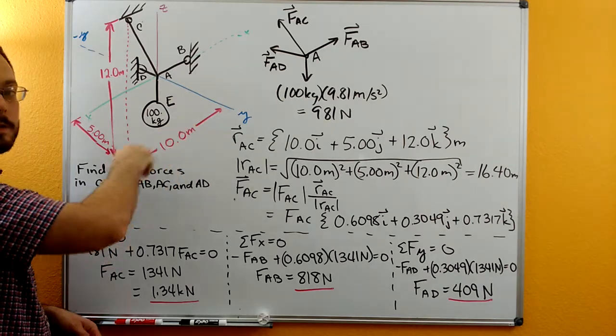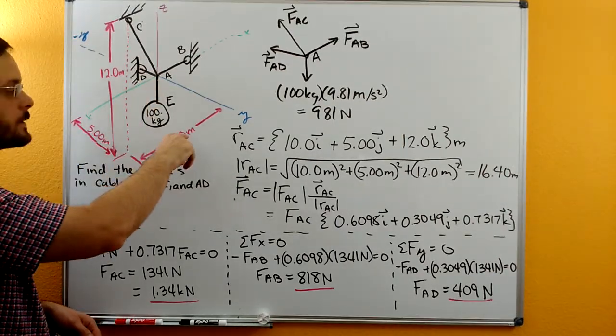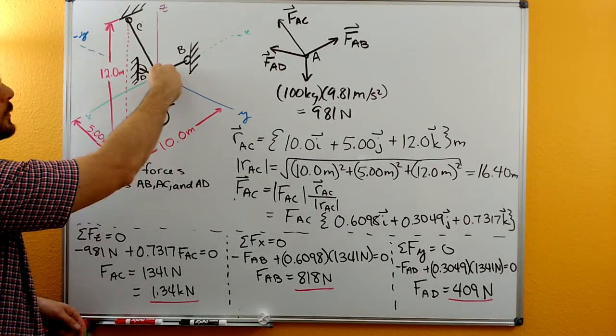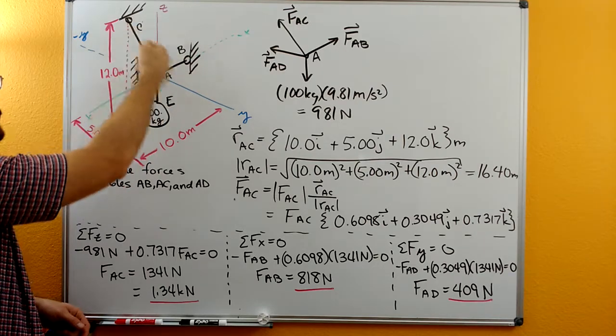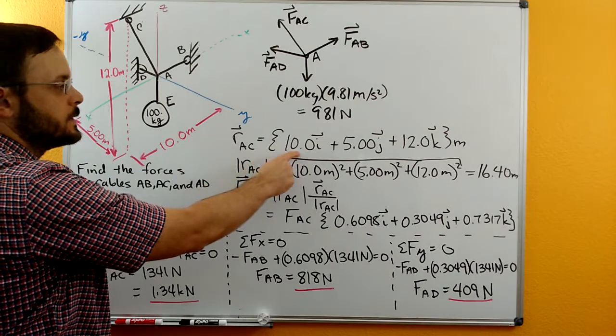the line that has the 10 meters on it with the arrows is parallel to the x-axis. That's how we can tell it's our x displacement. And if we're starting here at A, we're going to C, we're going out in the positive x direction. So positive 10 meters I.